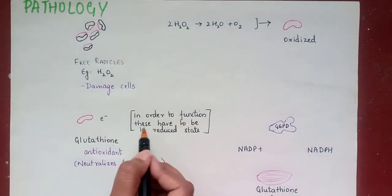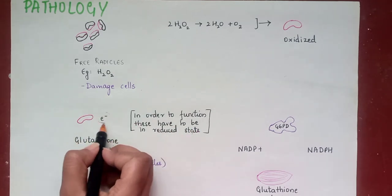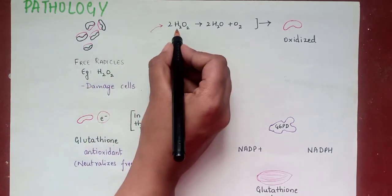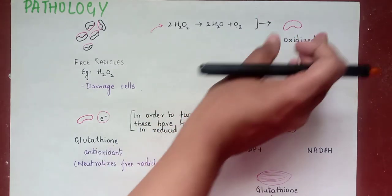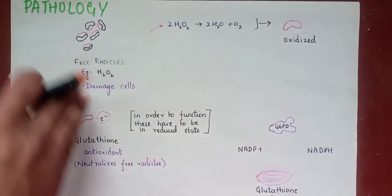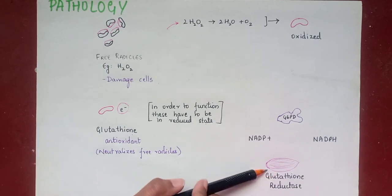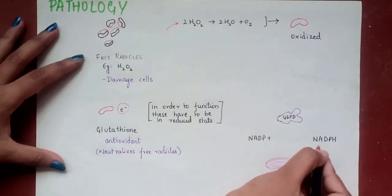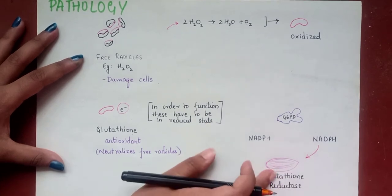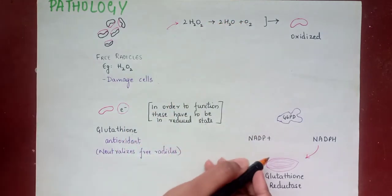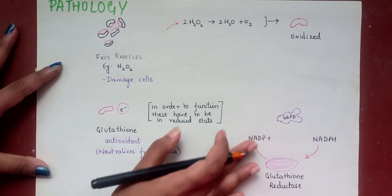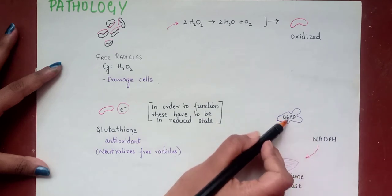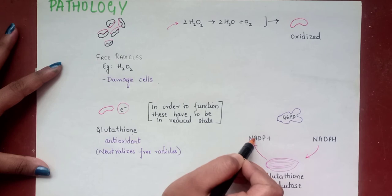Glutathione, in order to function, has to be in a reduced state — it gives an electron to the free radicals such as hydrogen peroxide, forming oxygen and water. So glutathione becomes oxidized when it gives the electron. This oxidized glutathione must be reduced back for its function. Glutathione reductase uses NADPH to donate the electron, converting oxidized glutathione back to its reduced state so it can again bind to free radicals. When NADPH loses the electron, it becomes NADP+.